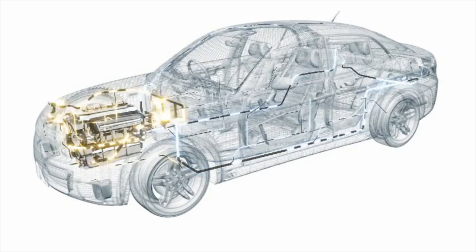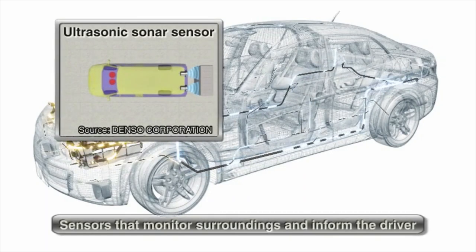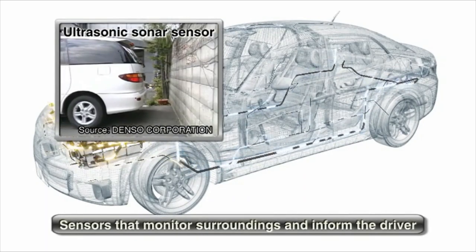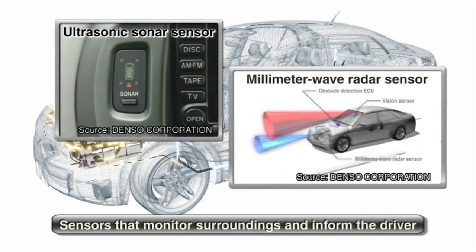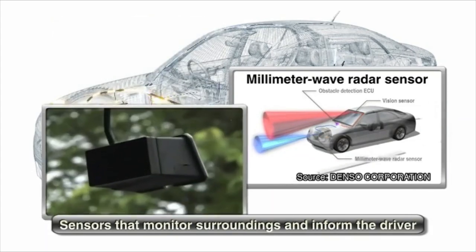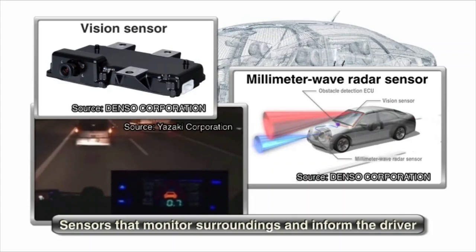Sensors that detect nearby obstacles and cars include the ultrasonic sonar sensor, the millimeter wave radar sensor, and the camera equipped vision sensor.